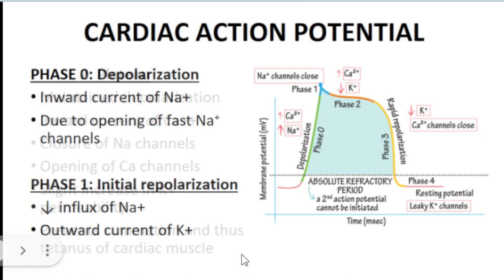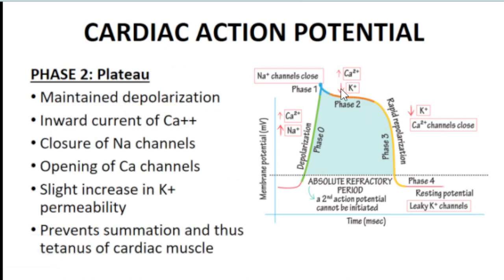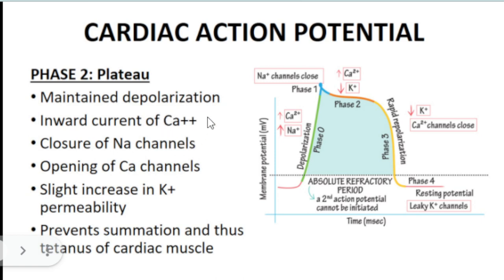Phase 2 is the plateau — the flat top of the action potential. Slow calcium channels open, allowing an inward current of calcium. Because calcium is more positive than potassium, even as potassium leaks out, the membrane potential does not drop significantly. This plateau phase also prevents summation and tetanus — no new action potential can occur during this time — allowing the heart to relax.